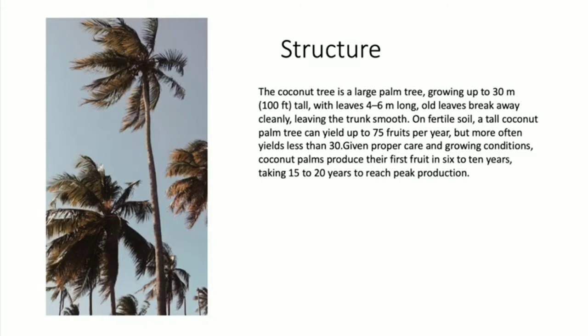Given proper care and growing conditions, coconut palm trees produce their first fruit in six to ten years, taking 15 to 20 years to reach full production.